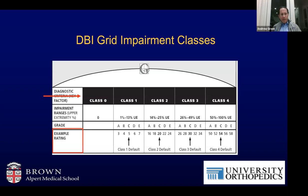There are grids — the DBI, or Diagnosis Based Impairment — which include classes that are diagnosis-based with ranges of assigned impairment ratings. Under class one, the range is 1% to 13% upper extremity impairment. Over on class four, it's 50% to 100% upper extremity impairment.